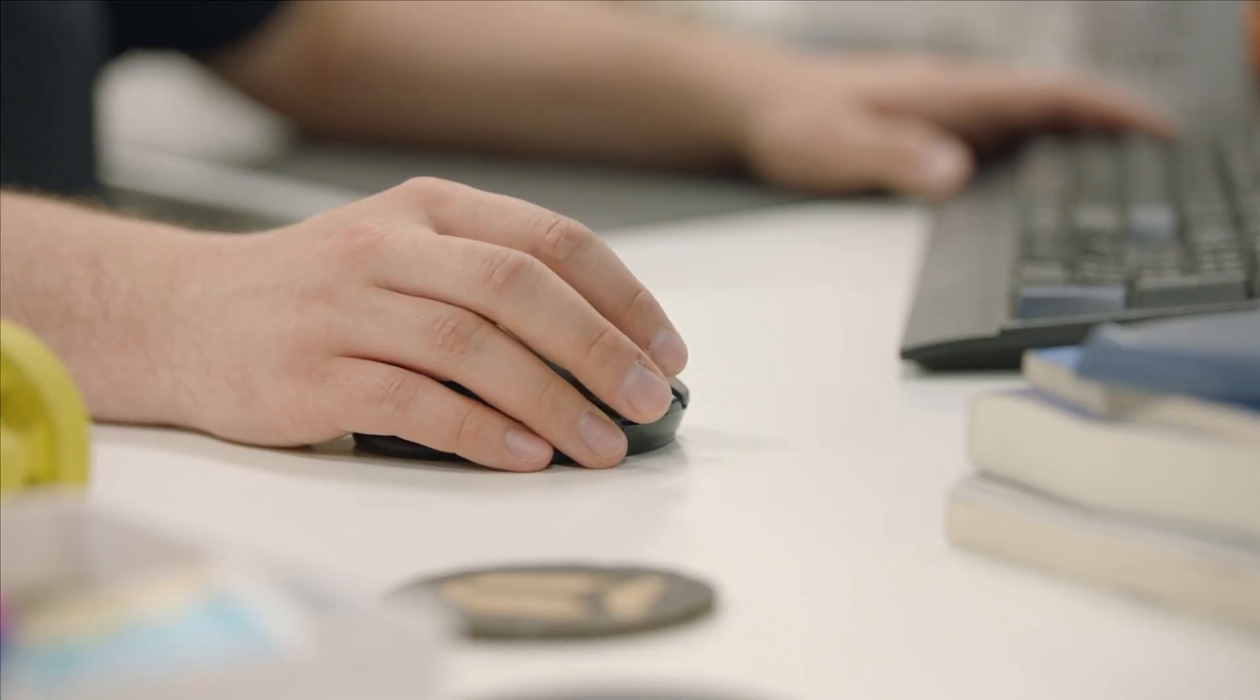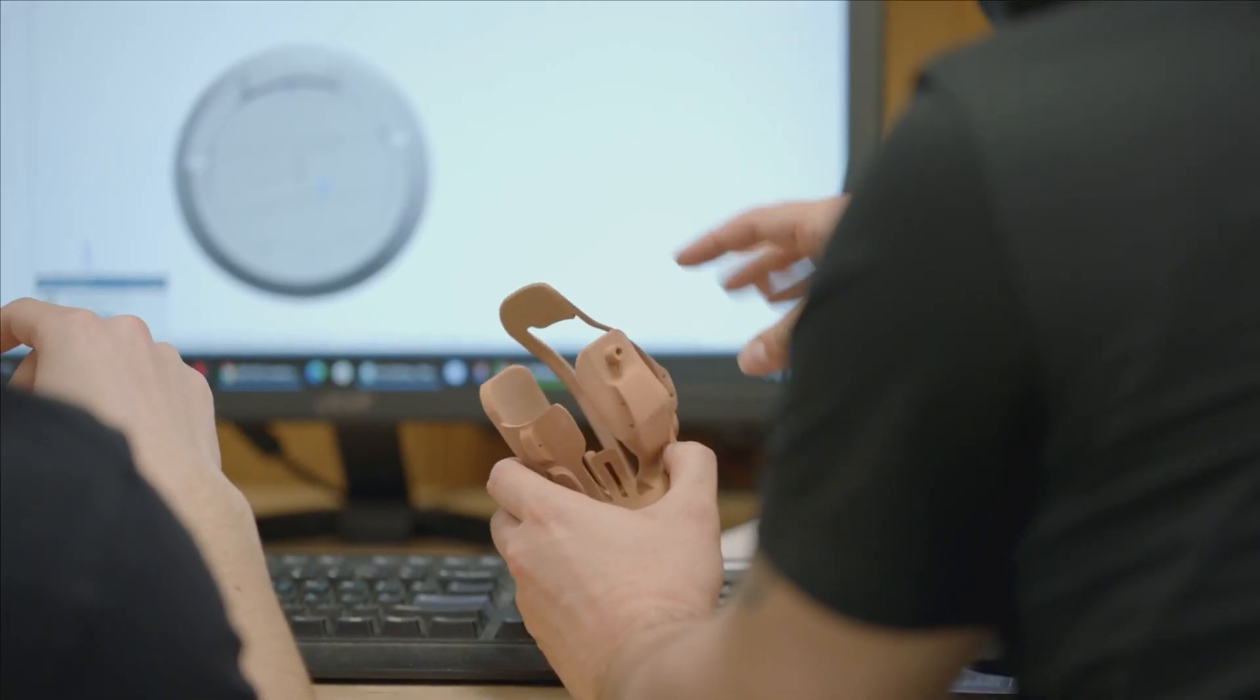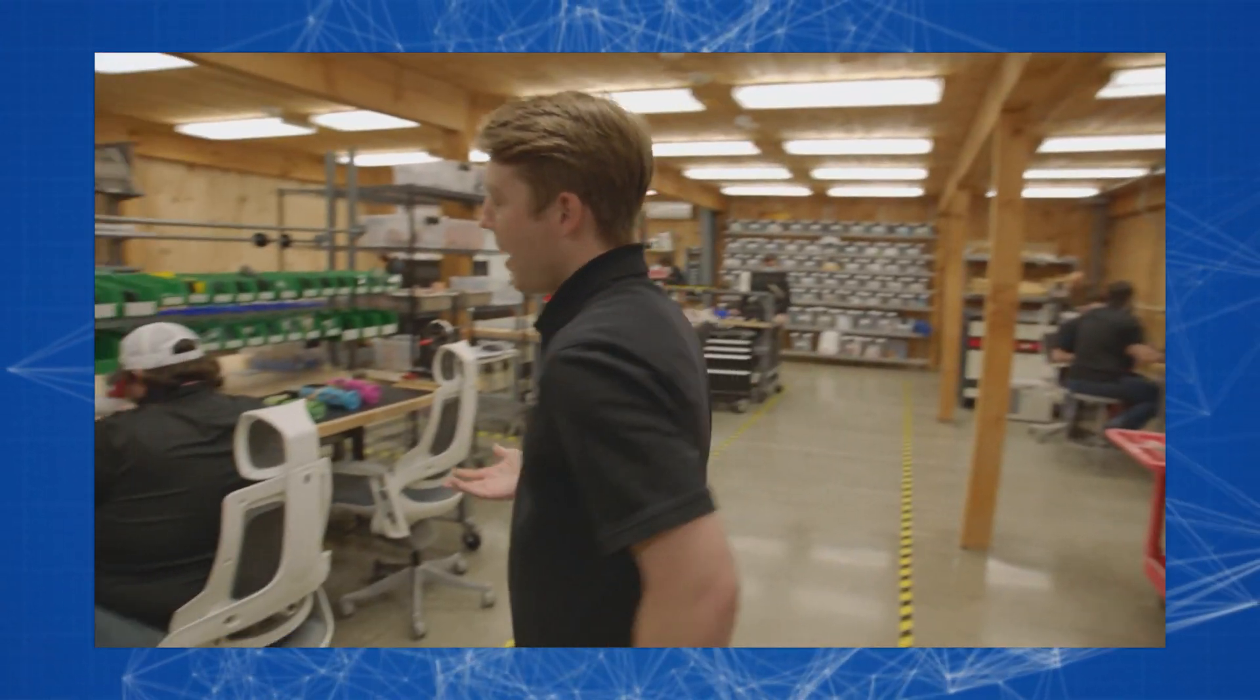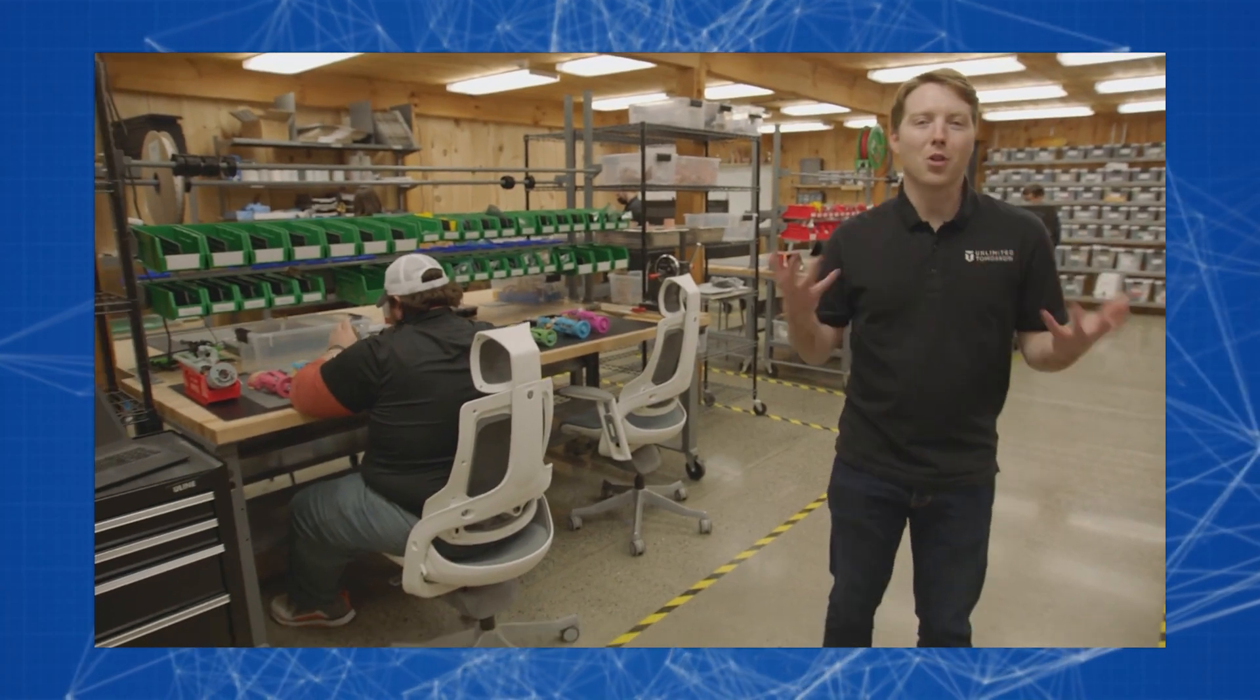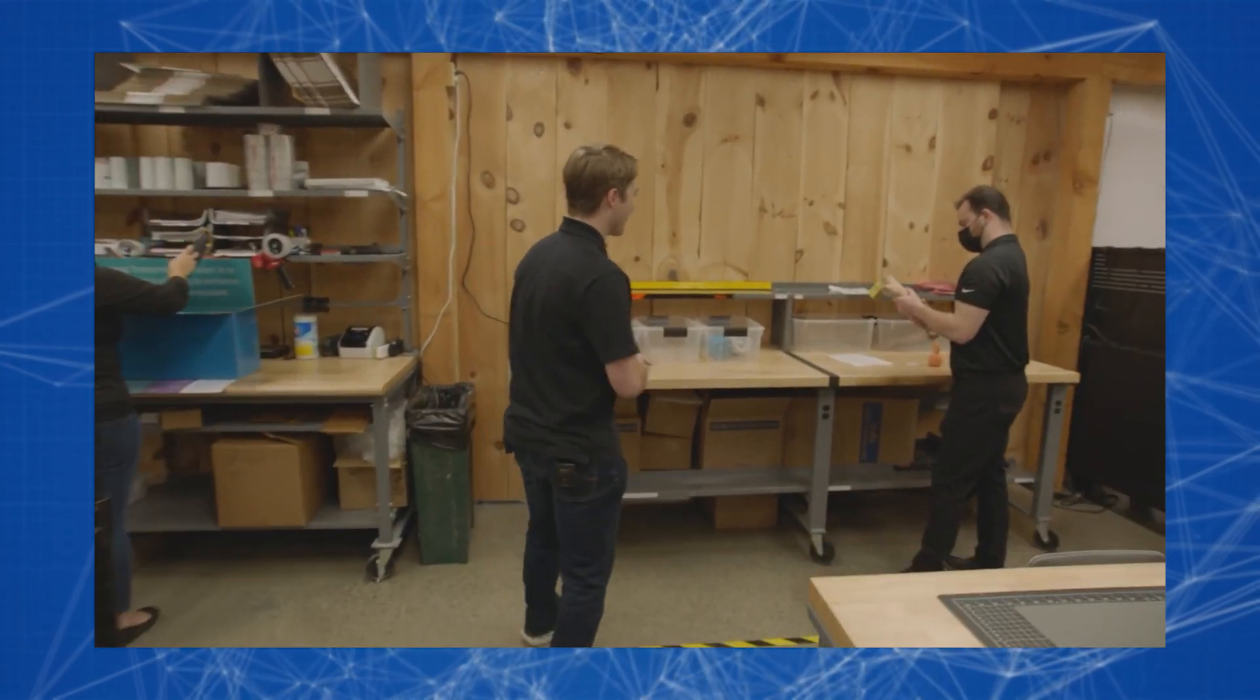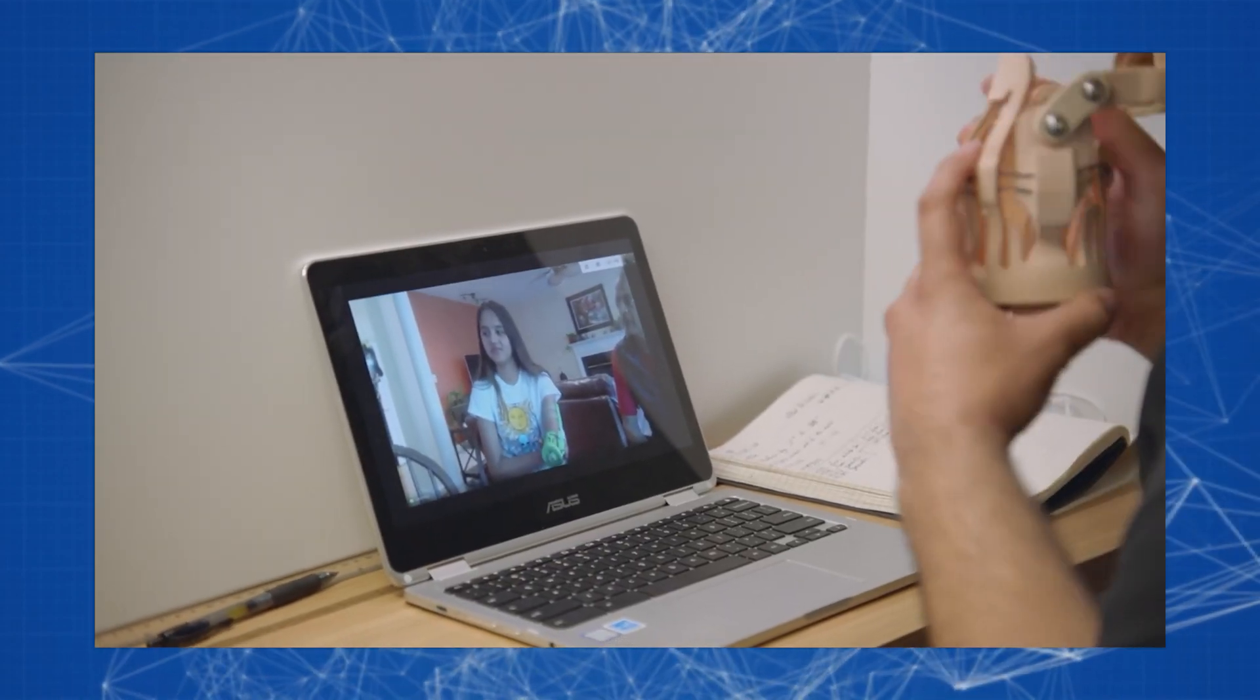So far, Unlimited Tomorrow startup operates only in the United States, but Easton LaChapelle plans to enter the international market with his product. To do this, he has already moved from his garage in Colorado to a New York office, acquired a team of 14 people, and is successfully developing a project that can help hundreds of thousands of people who have lost one or two limbs or arms.